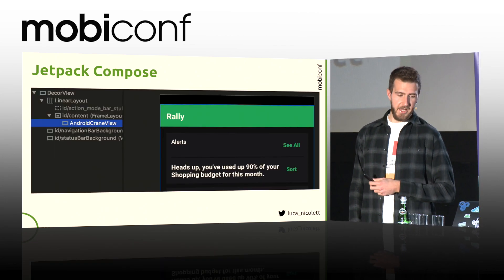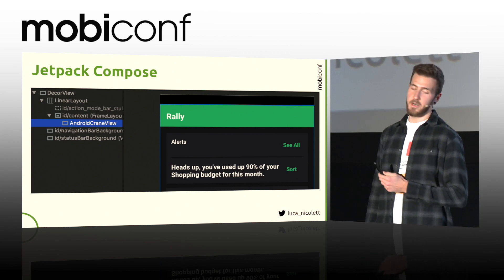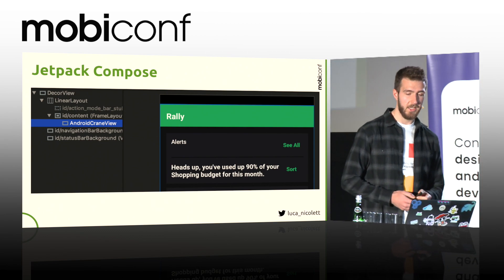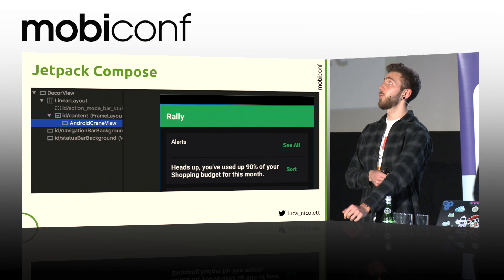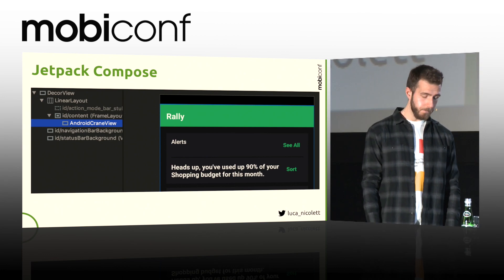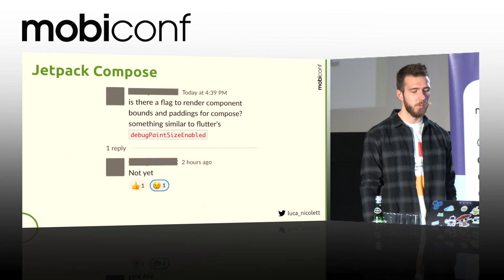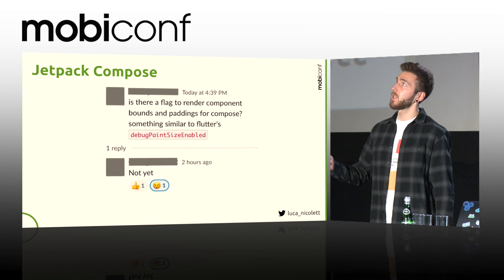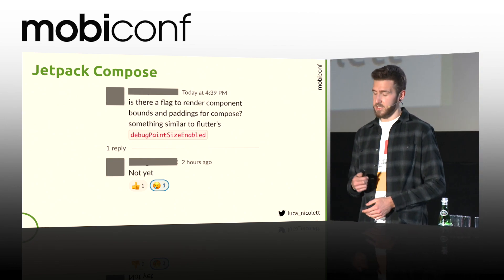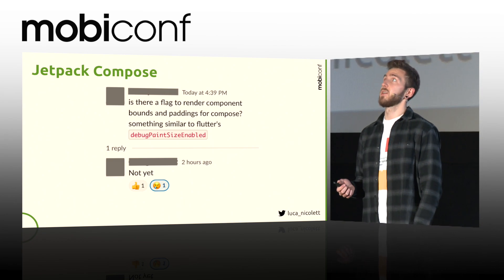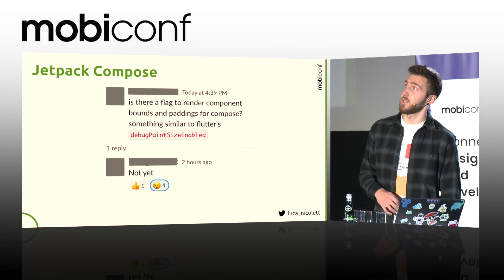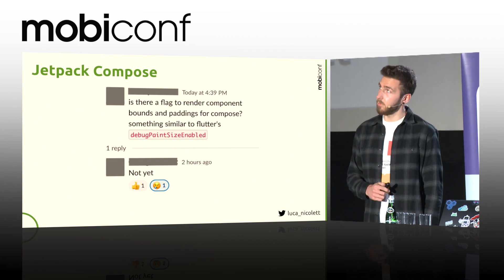This means that we end up having just one view in the entire hierarchy of the activity or fragment, and you can't inspect any views — there's no way to tell what the margins or padding of every single view are. We asked in the Compose Slack channel if there's a flag like debugPaintBoundsEnabled, which is a Flutter option that allows the application to draw paddings and bounds on top of the canvas. But there's nothing like it yet, and hopefully they will provide something.